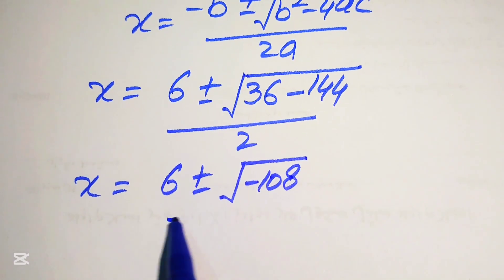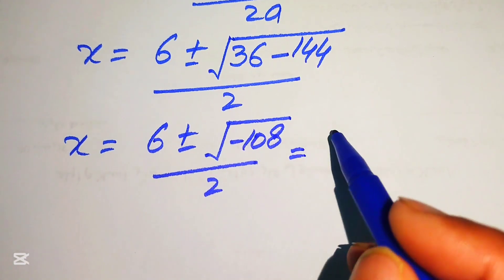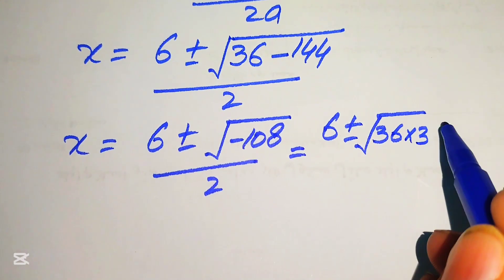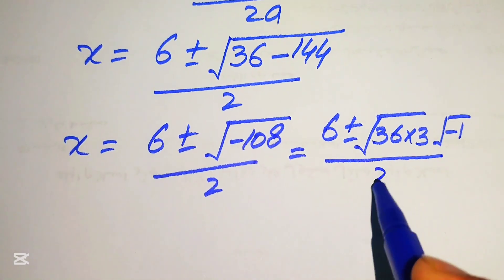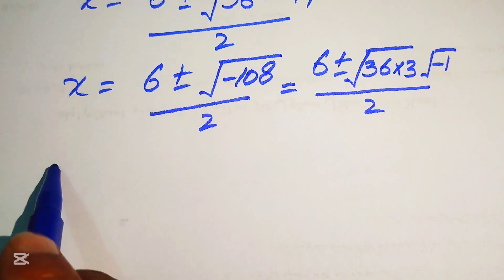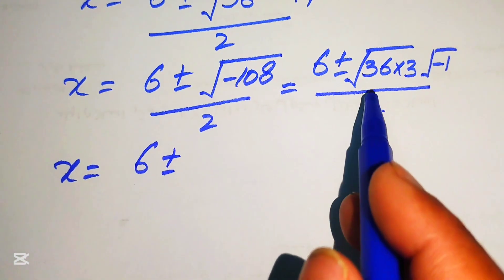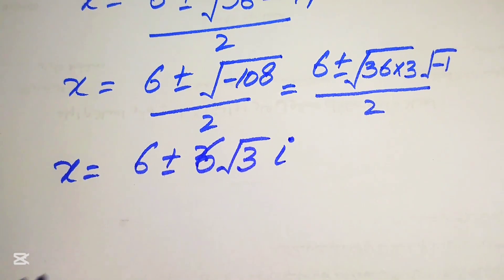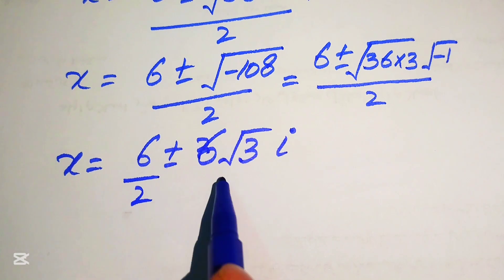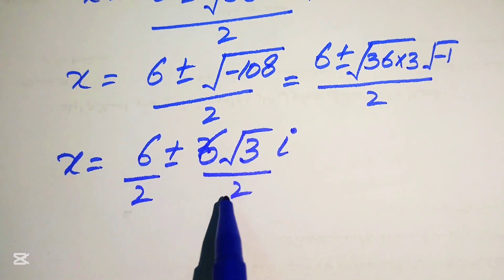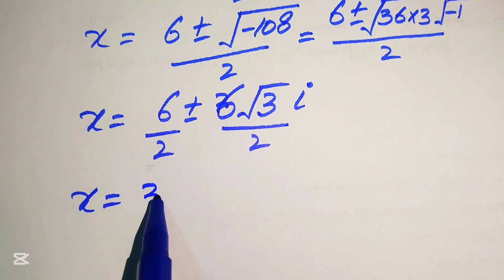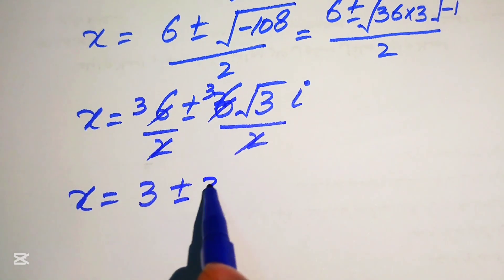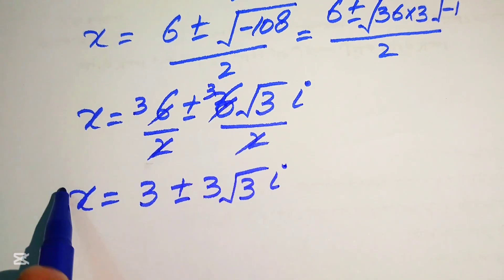We simplify: −108 = 36 × 3 × (−1), so √(−108) = 6√3 · i. Dividing by 2 gives x = 3 ± 3√3 · i. These are the other two complex roots from equation 2.